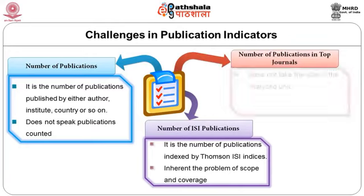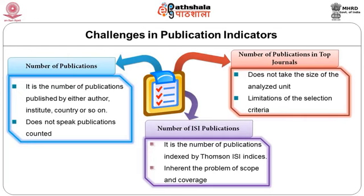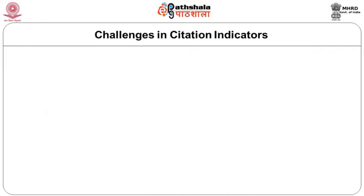The third indicator is the number of publications in top journals — the number of publications the analyzed unit has published in a selected number of journals during the analyzed time span. The selection of journals is usually made on some criteria. The advantage is that data is collected from top journals, showing their relative importance among others in the group. It is a better count than a mere publication count, but it does not take the size of the analyzed unit into account and has the limitations of selection criteria. Although this approach may look like a performance indicator, it was designed to address the shortcoming of the above-mentioned quantity indicators. The next category is citation indicators.